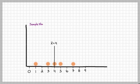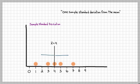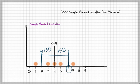Now let's work with the sample standard deviation. The question is: what is one sample standard deviation from the mean? We want to find the distance to the right of the mean and to the left of the mean that equals one standard deviation — positive one standard deviation on the right and minus one standard deviation on the left.